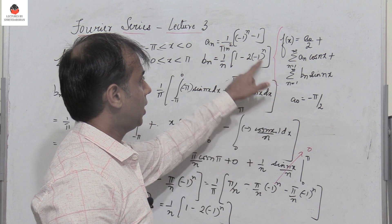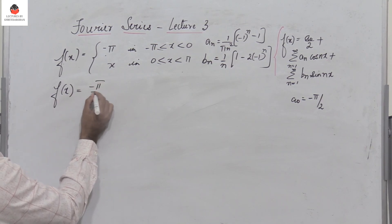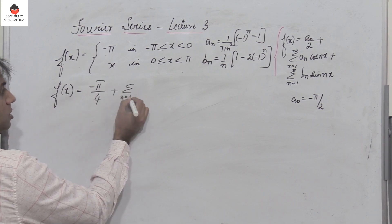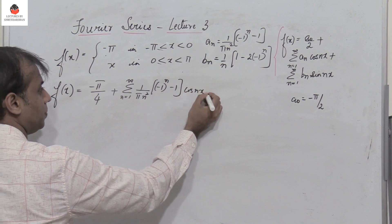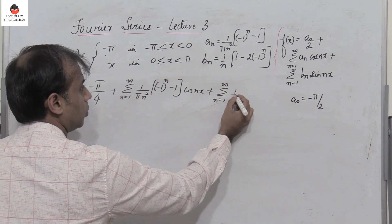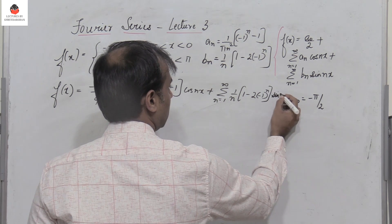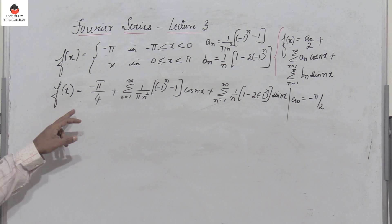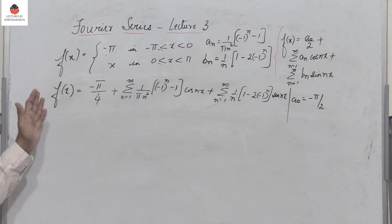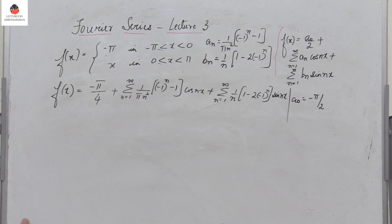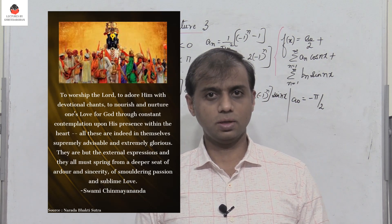We have obtained a₀, aₙ, and bₙ. Substituting into the Fourier series: f(x) equals a₀/2, which is minus pi/4, plus the summation from n=1 to infinity of (1/(πn²))[(−1)ⁿ − 1] cos(nx), plus the summation from n=1 to infinity of (1/n)[1 − 2(−1)ⁿ] sin(nx). If a function f(x) is neither odd nor even, we must find a₀, aₙ, and bₙ. Thanks for watching.